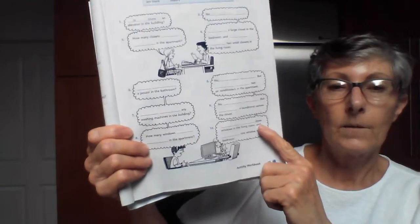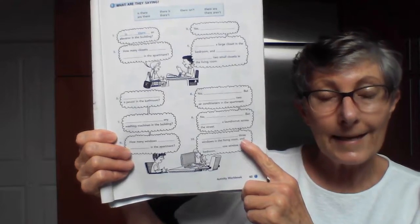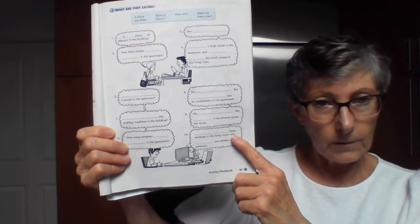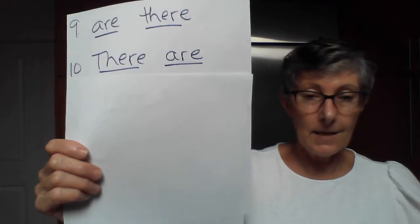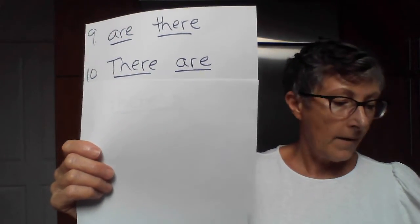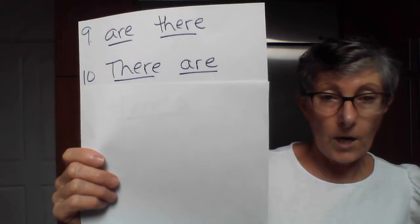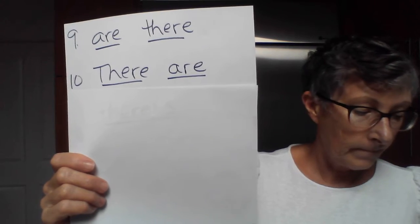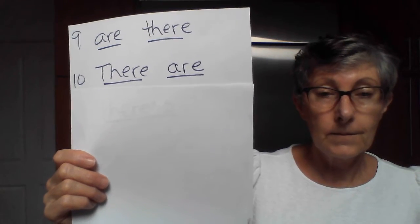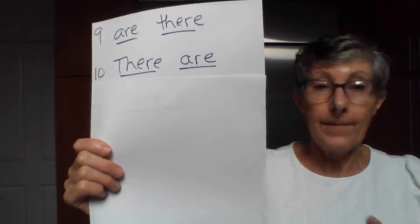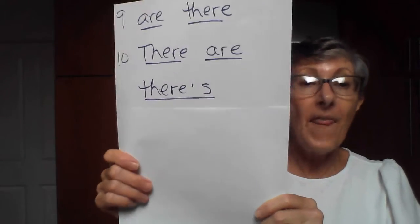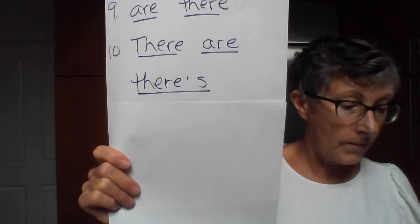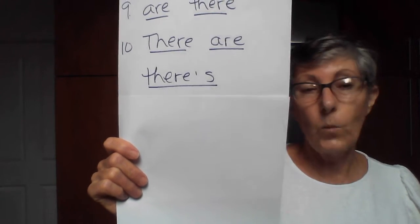And the answer is — three — correct, it's going to be plural. There are three windows in the living room. And one — that's singular — so we need to use 'there's.' Number ten: there's one window in the bedroom.